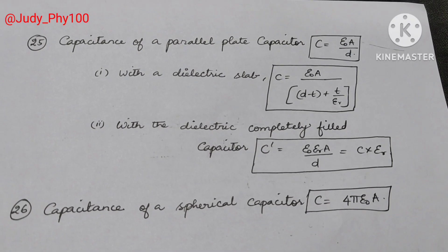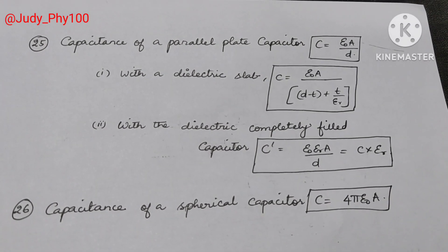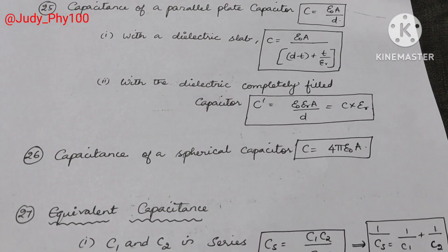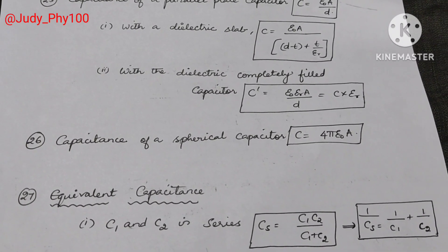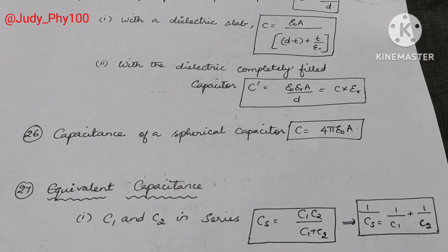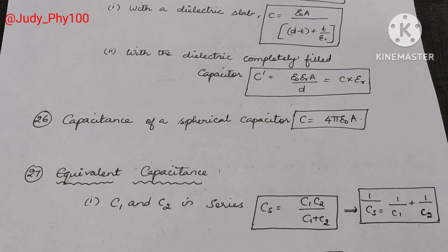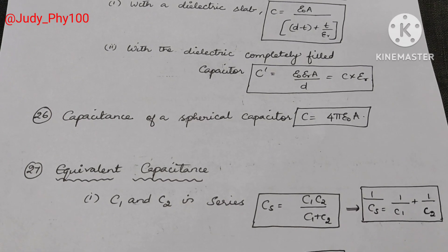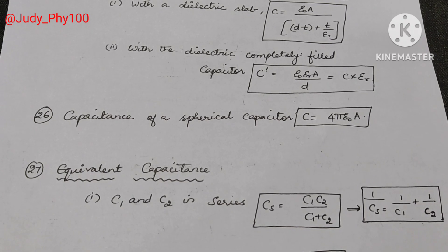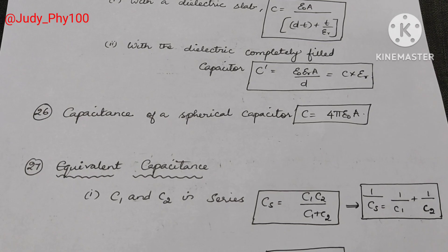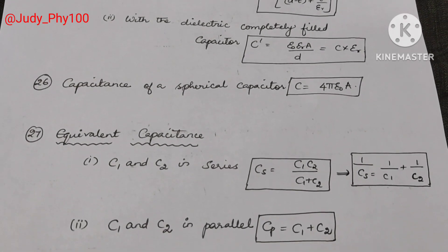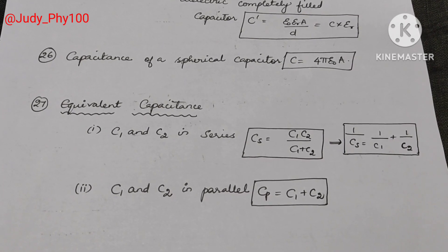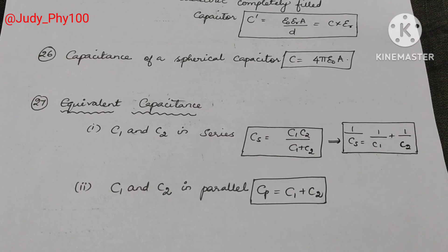With the dielectric completely filling the capacitor: C dash is equal to epsilon naught epsilon r A divided by d. Capacitance of a spherical capacitor: C is equal to 4 pi epsilon naught into a. Equivalent capacitance in series: 1 by C is equal to 1 by C1 plus 1 by C2, equivalently C equals C1 C2 divided by C1 plus C2. Capacitance in parallel: C p is equal to C1 plus C2.